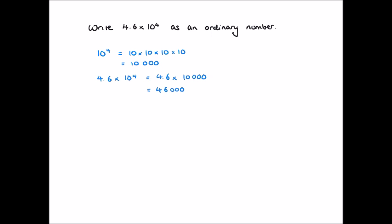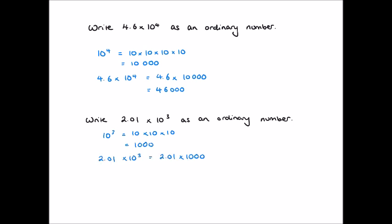When we do, we find that 4.6 times 10,000 is equal to 46,000. Let's repeat this process with 2.01 times 10 cubed. 10 cubed is 10 times 10 times 10, which is simply 1,000. So 2.01 times 10 cubed equals 2.01 times 1,000. We move all the digits to the left 3 spaces and get 2,010. So 2.01 times 10 cubed is equal to 2,010.